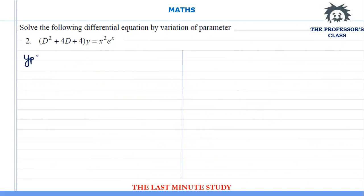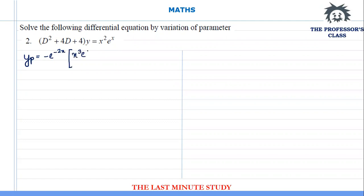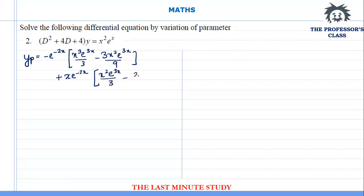Assembling yp: it equals -e^(-2x)·[x³·e^(3x)/3 - 3x²·e^(3x)/9] plus x·e^(-2x)·[x²·e^(3x)/3 - 2/9·e^(3x)]. Now multiplying through the e^(-2x) with the terms inside.